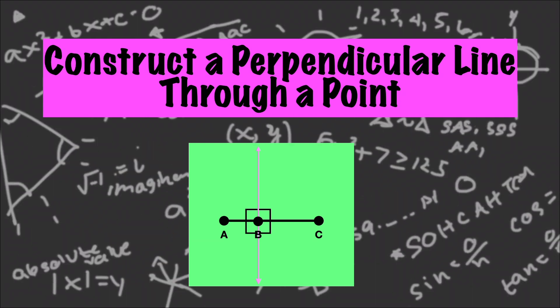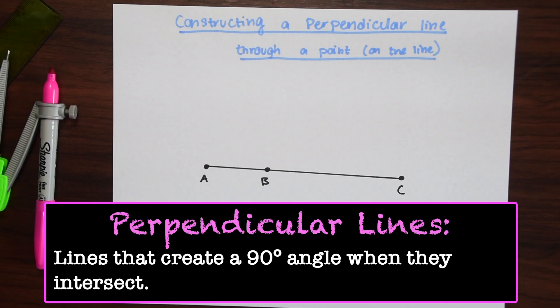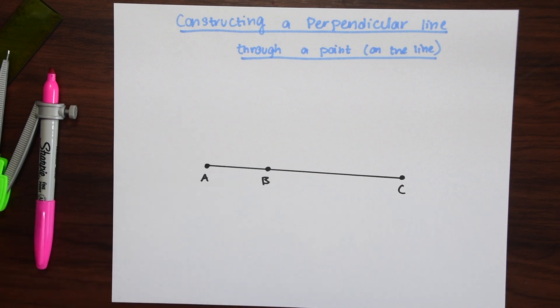So just a little reminder about what a perpendicular line is. It's a line that will intersect our given point which is point B. Once it does it will then create a 90 degree angle.